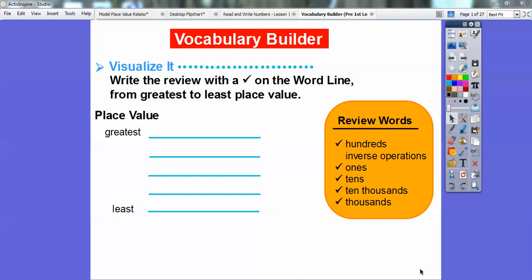We'll be talking about these later on in the chapter. So here we have this list of words and we're going to write the review words that have the check mark on the word line. We're going to place them from the greatest to the least.